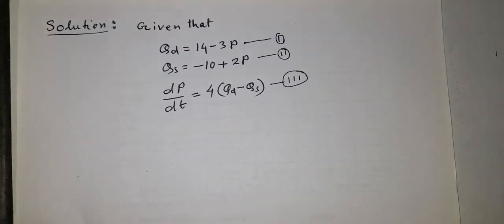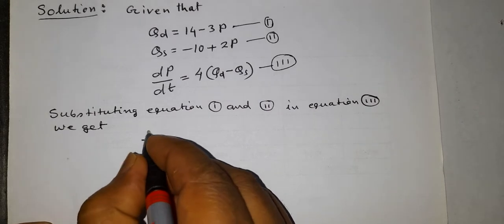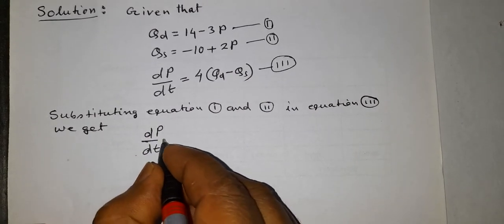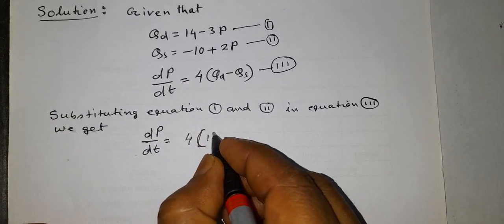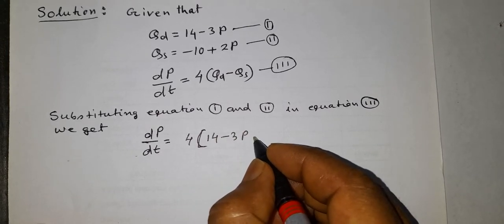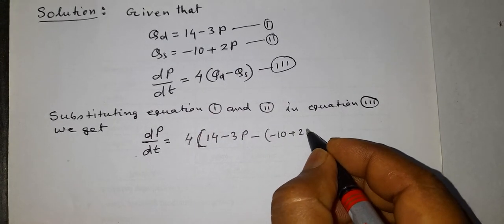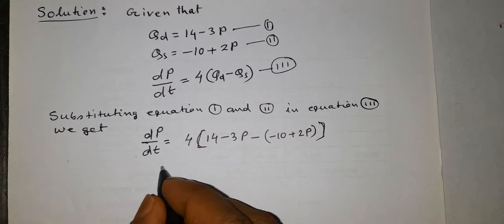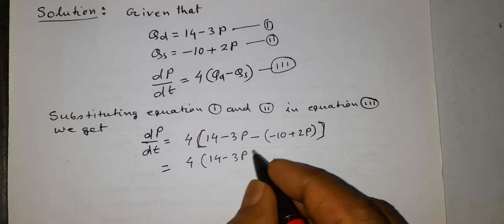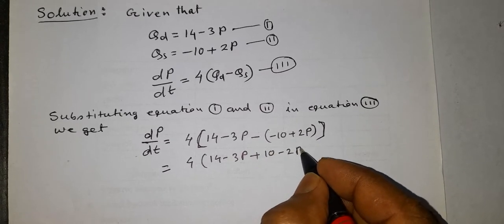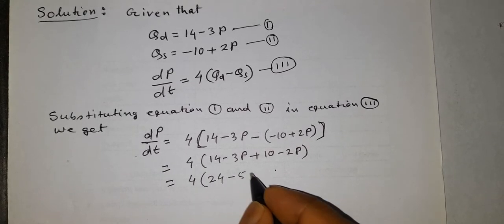Now substituting equations 1 and 2 into equation 3, we get dp/dt = 4[(14 − 2p) − (−10 + 2p)], which simplifies to 4(14 − 2p + 10 − 2p), giving 4(24 − 4p).